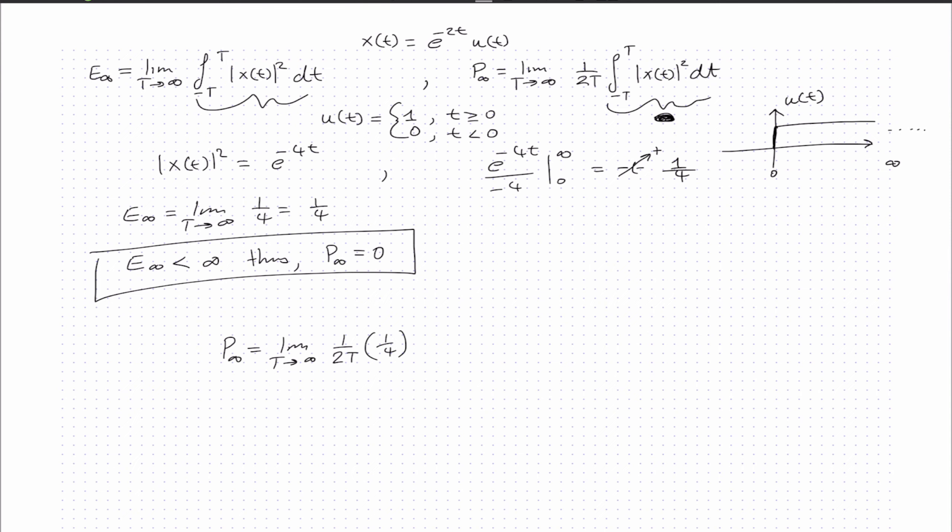This gives us the limit as T approaches infinity of 1/4 times 1 over 2T, which equals the limit of 1 over 8T. As T approaches infinity, this equals 0, since 1 over infinity equals 0.